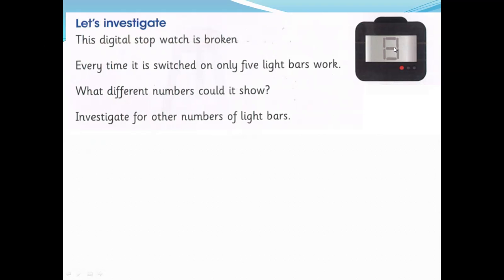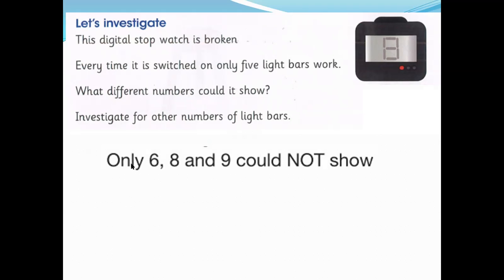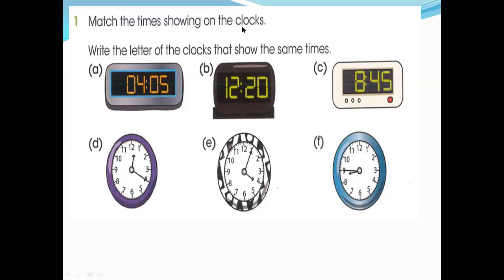From one to nine: one and two are easily available with five light bars. Six, nine, and eight are not possible - you can see here, six has six light bars, so it needs six but we only have five. So six, eight, and nine cannot be shown. Other numbers - zero, one, two, three, four, five - can be shown, but these three numbers could not.